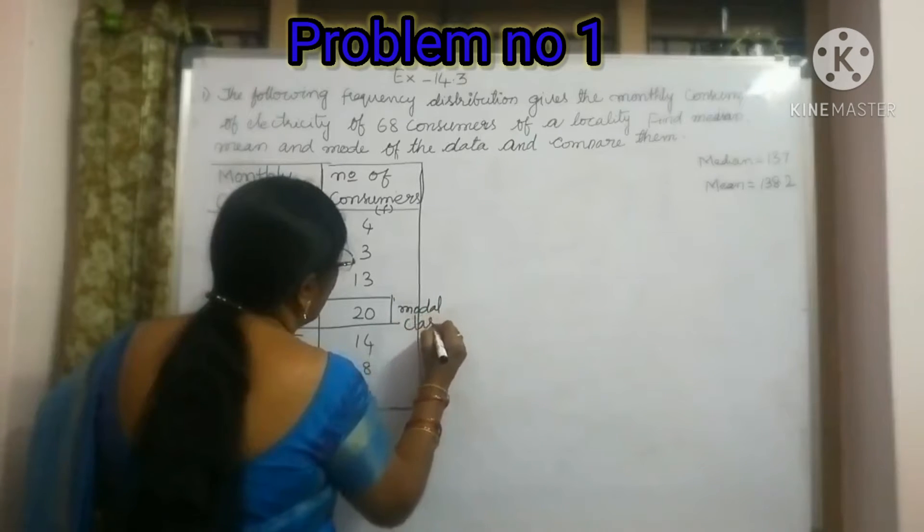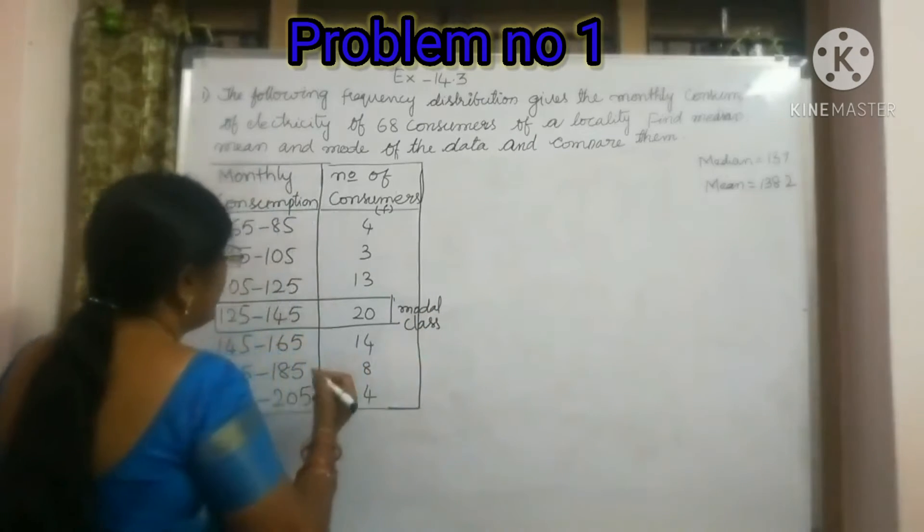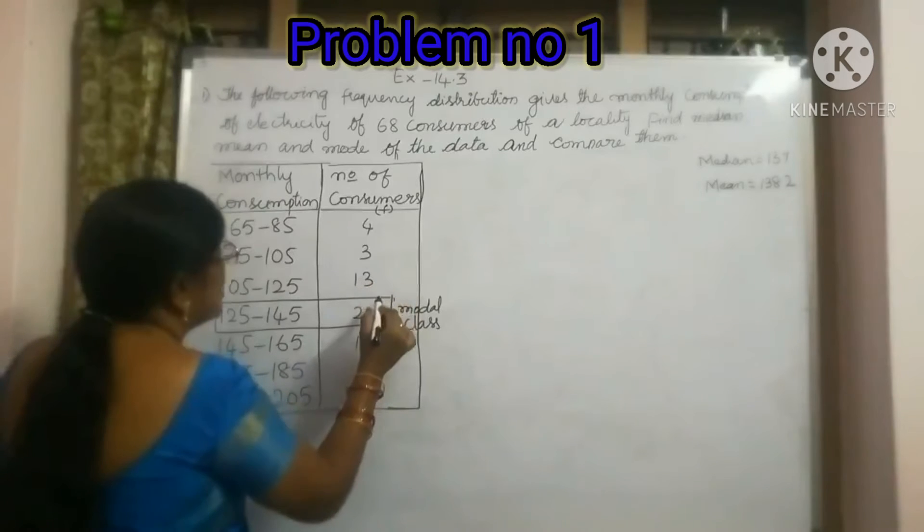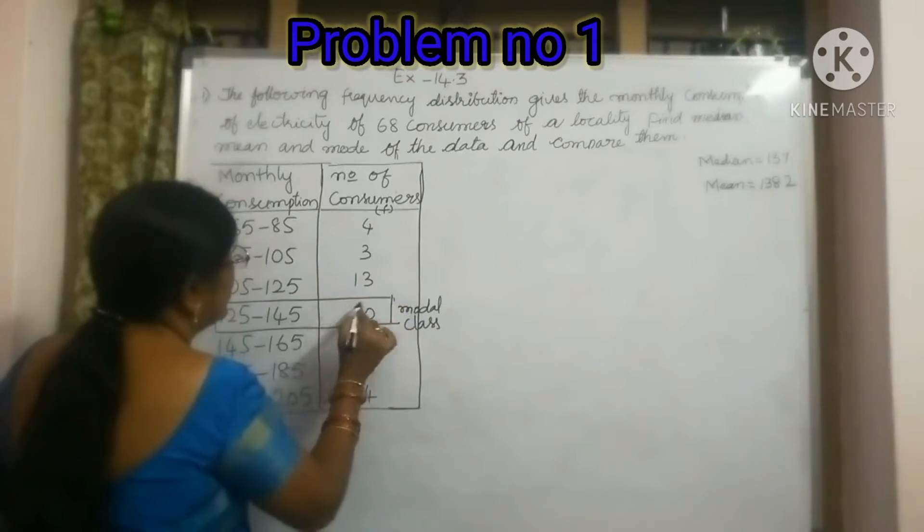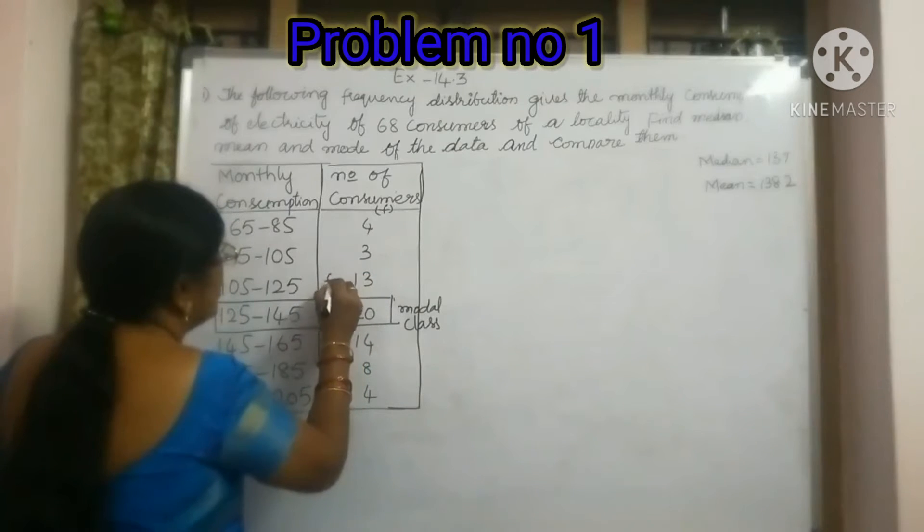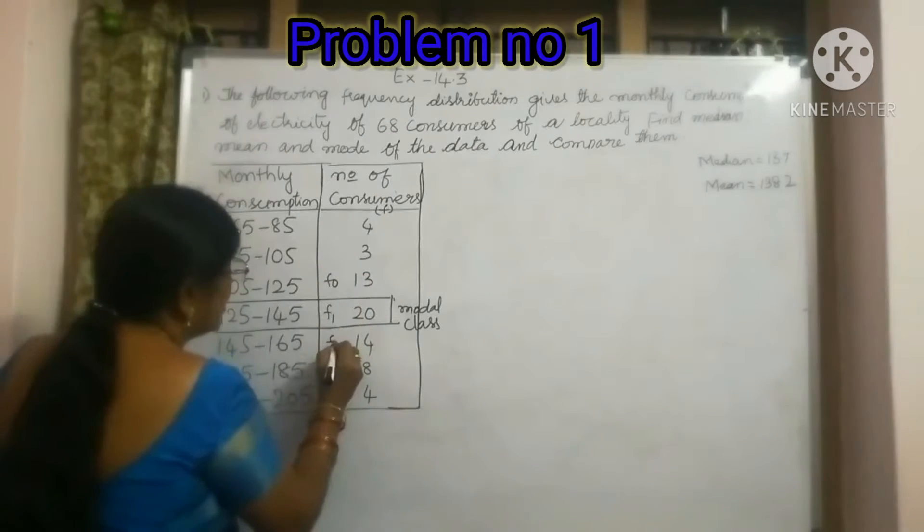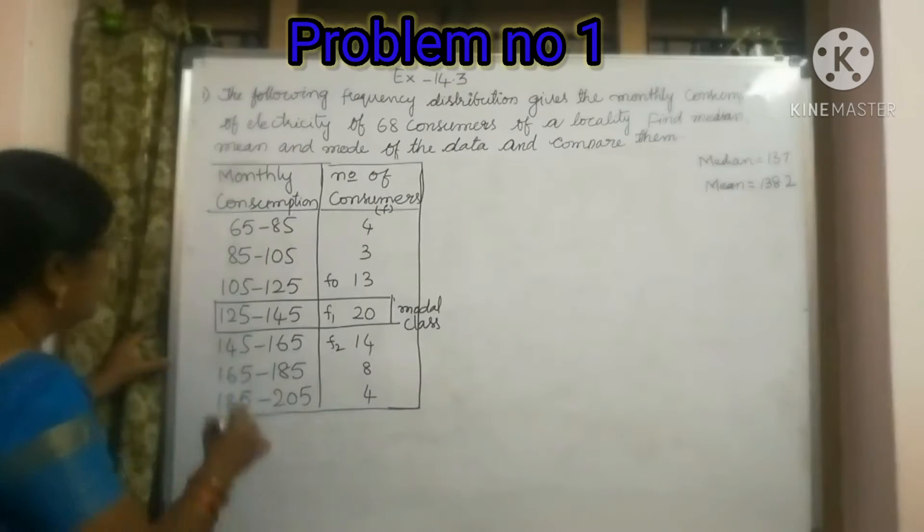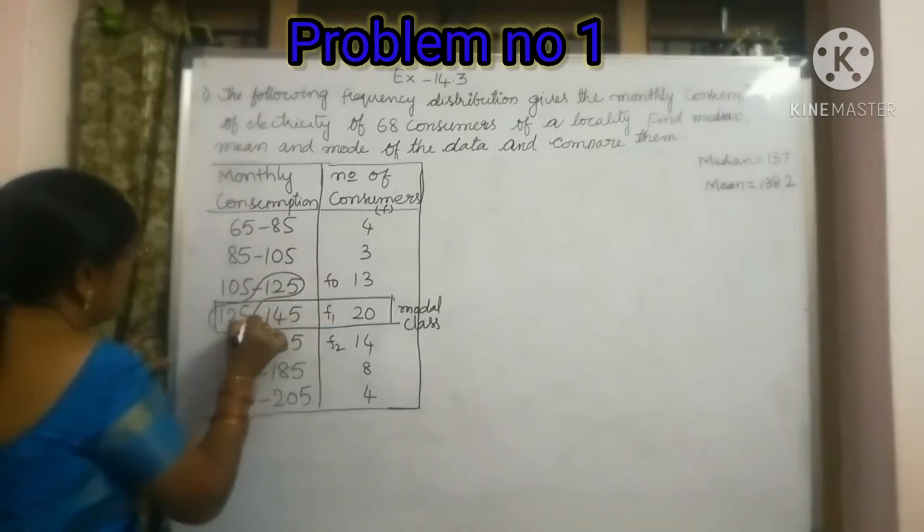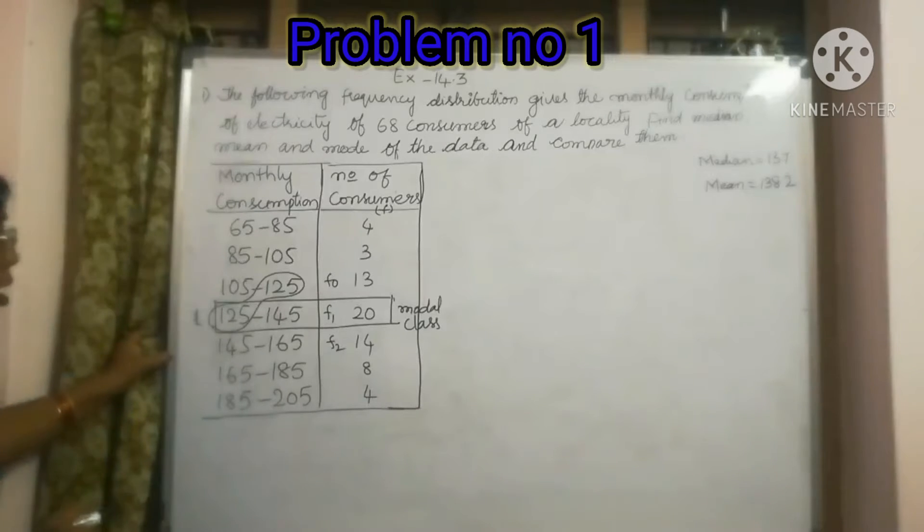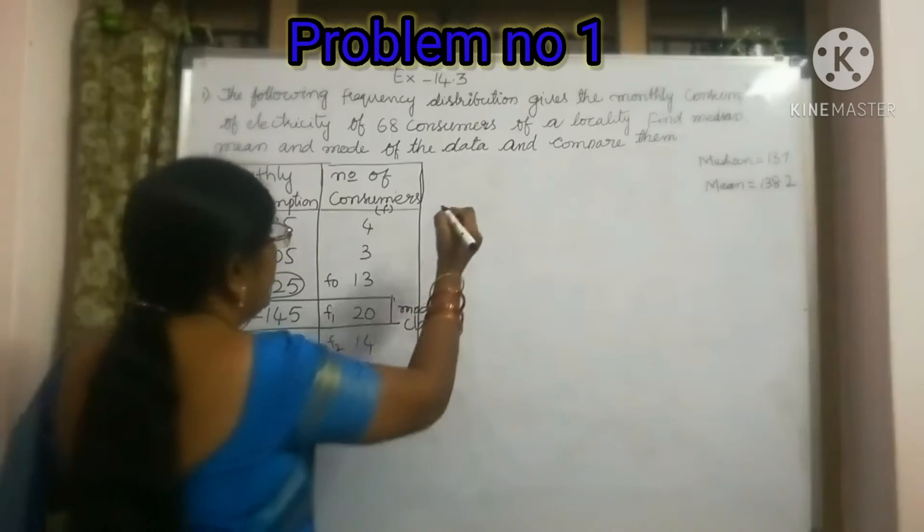After deciding the modal class, we will write: this one is F1, this one is F0, and here this one is F2. And this is the lower boundary of the modal class, the average of these two. Now, we will write the formula.